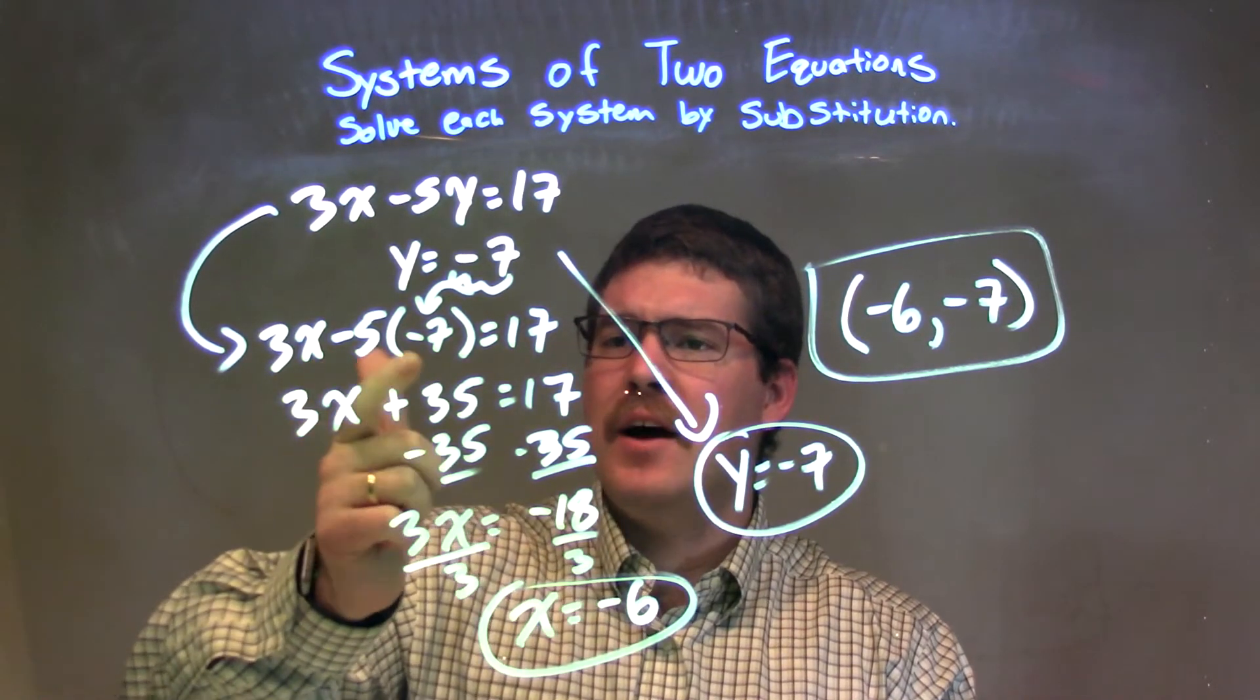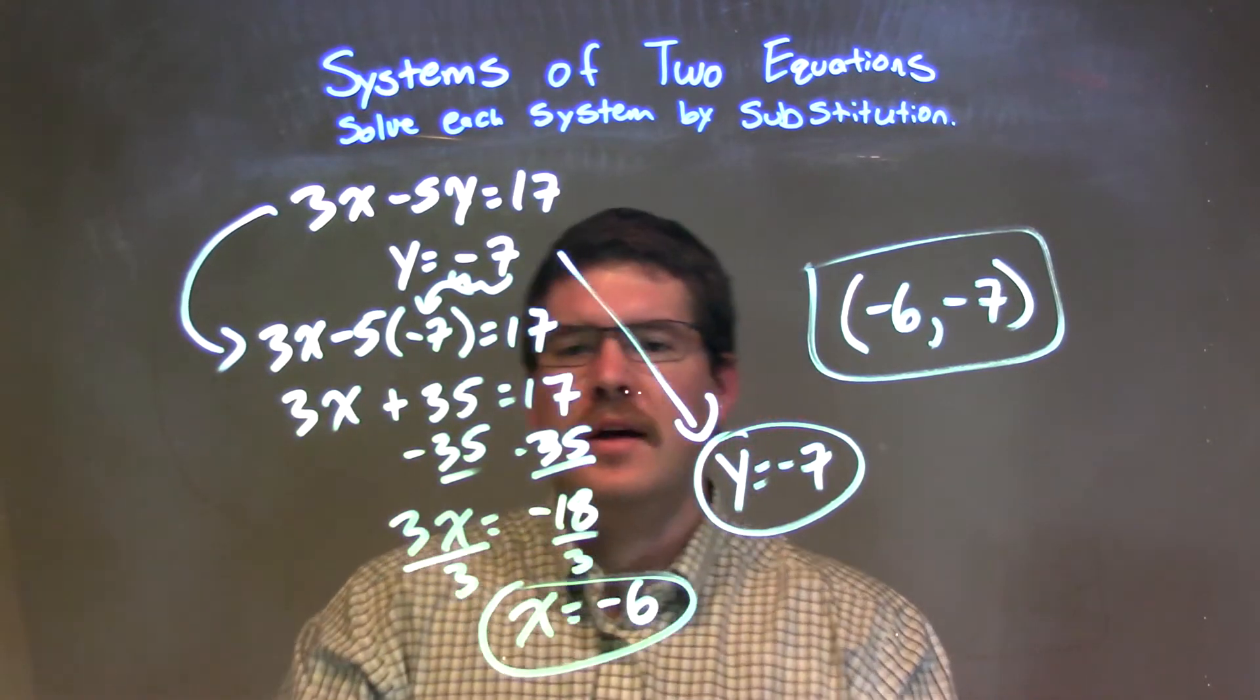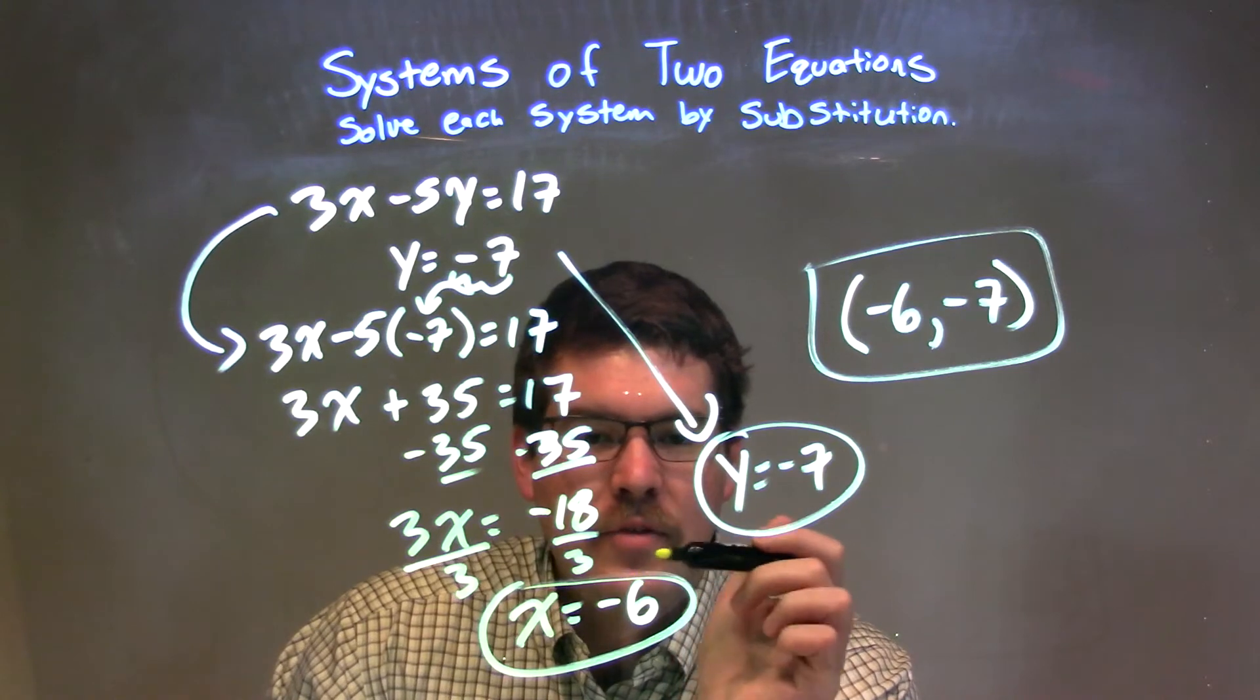I simplify it. Negative 5 times negative 7 is a positive 35. So if I subtract 35 to both sides, I have negative 18. Divided by 3 to both sides gave me x equals negative 6.